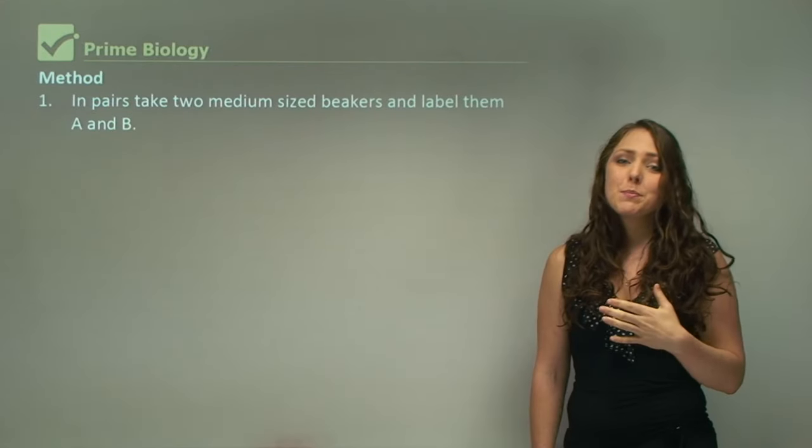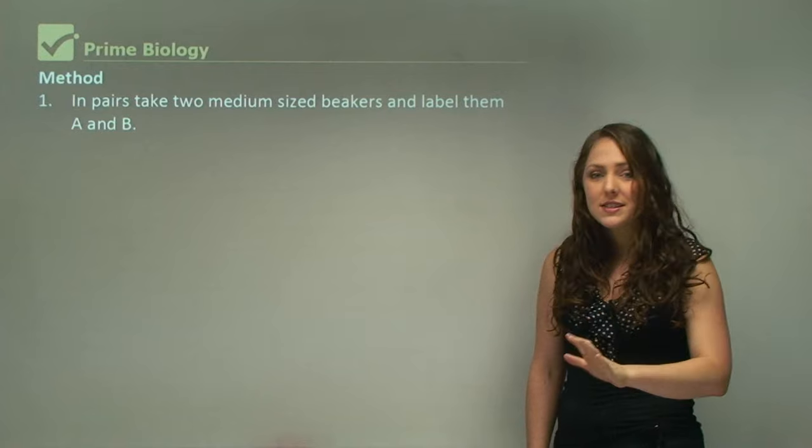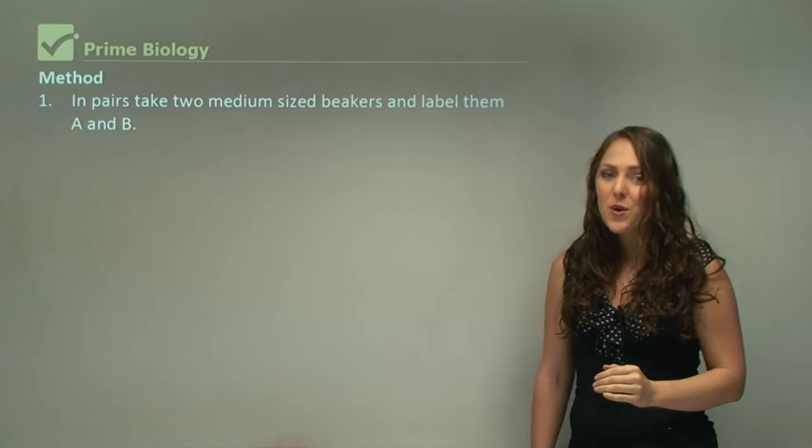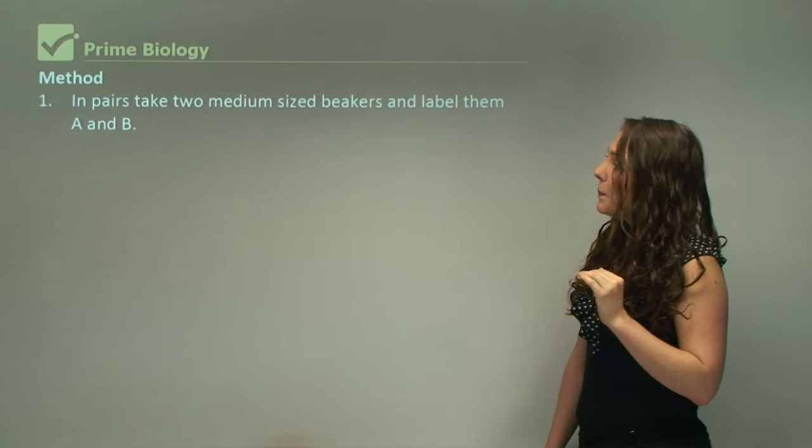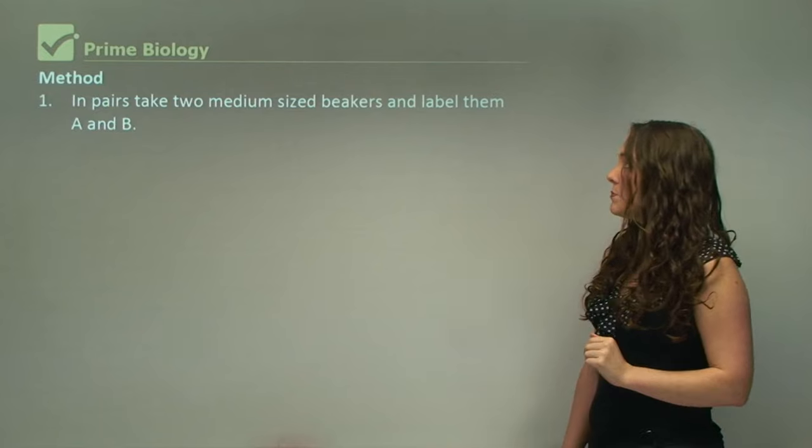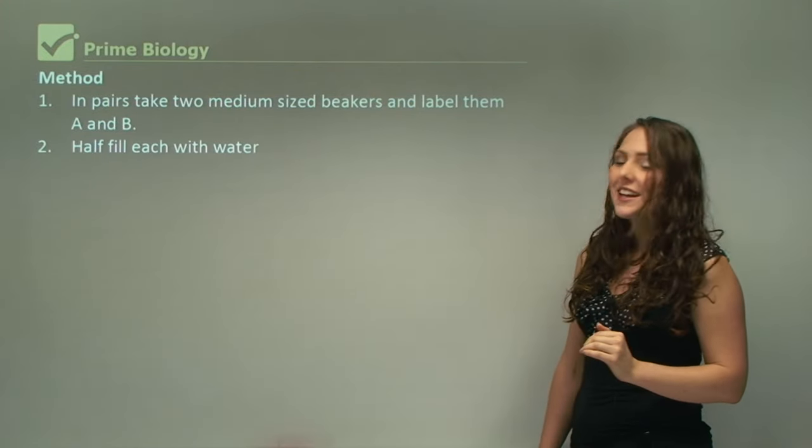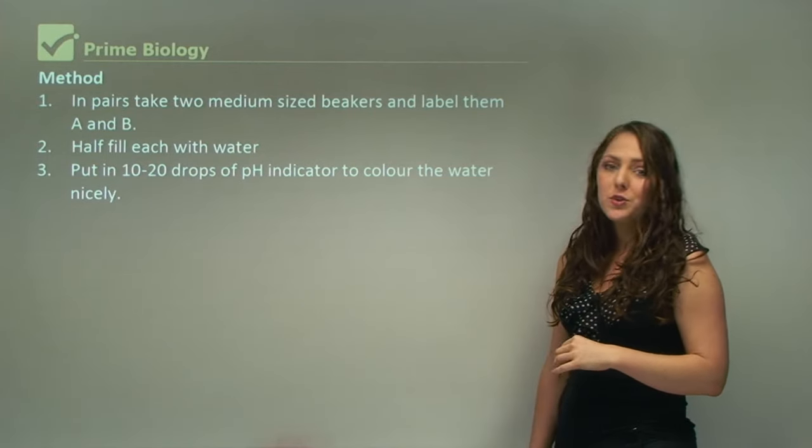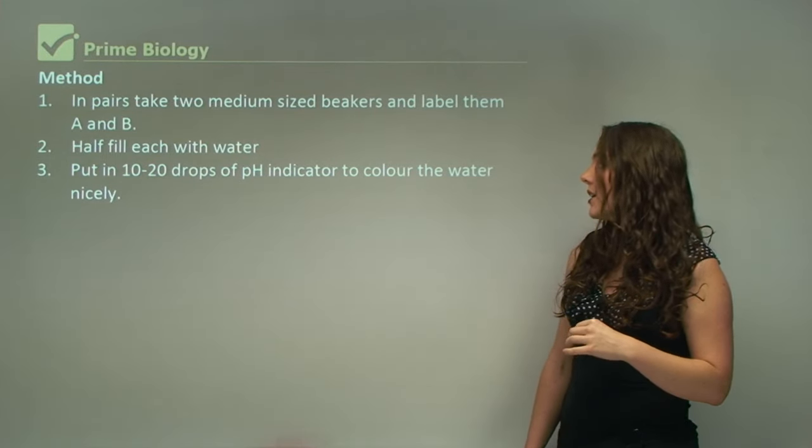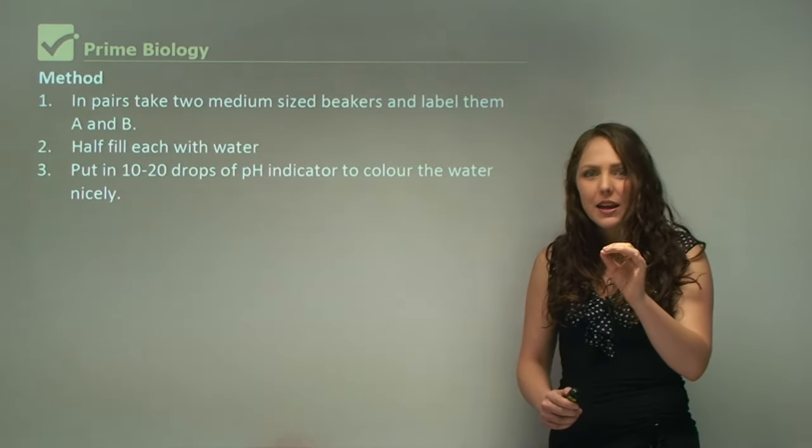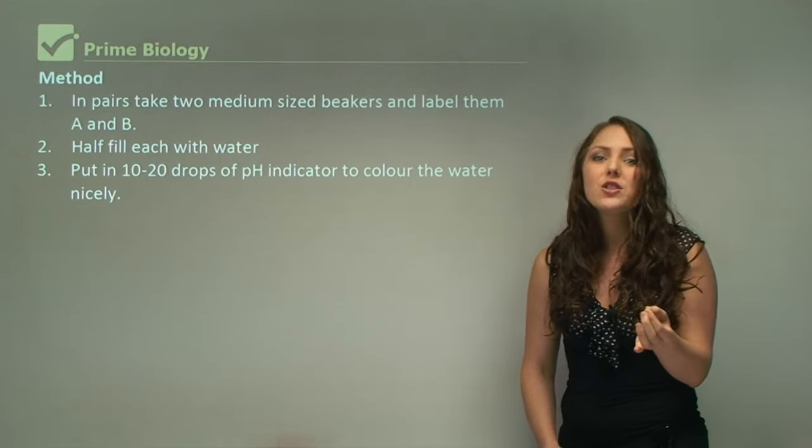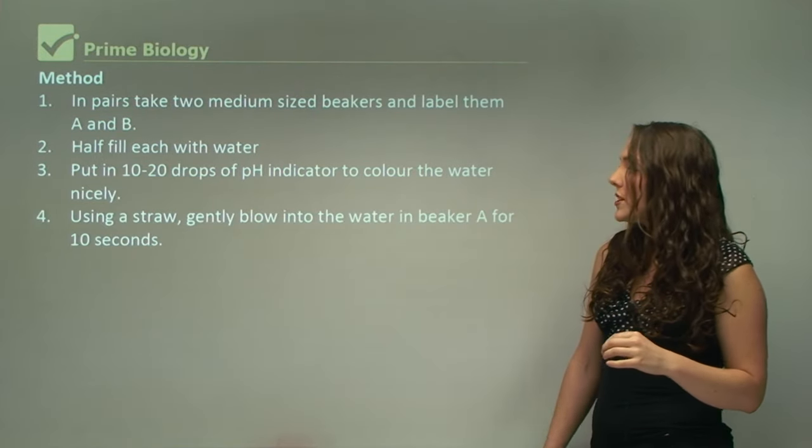The method, and you need to write this up in steps, not dot points, not sentence form, method should always be written in steps. In pairs, take two medium-sized beakers and label them A and B. Half fill each with water. Put in 10 to 20 drops of universal indicator to color the water nicely. If your universal indicator is strong, you mainly need five drops.